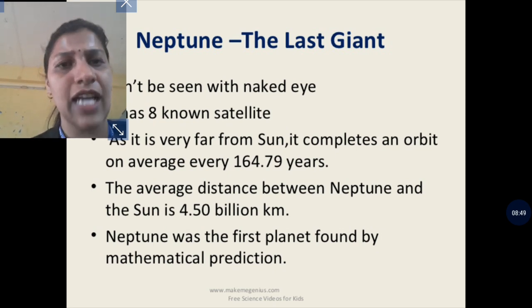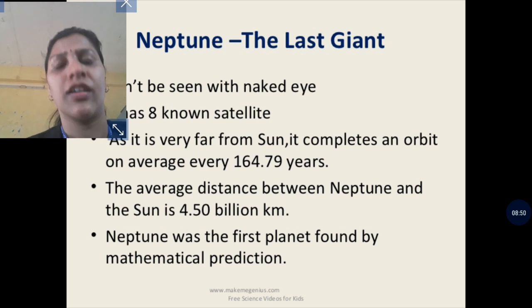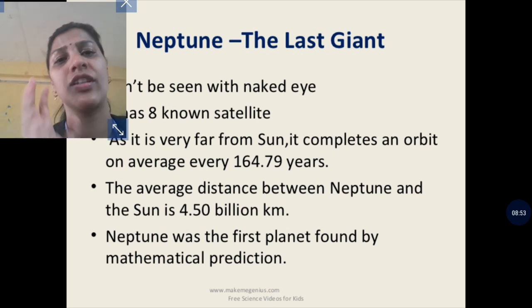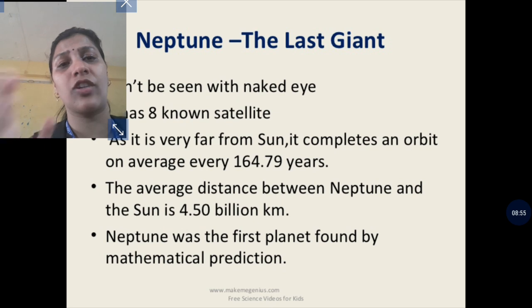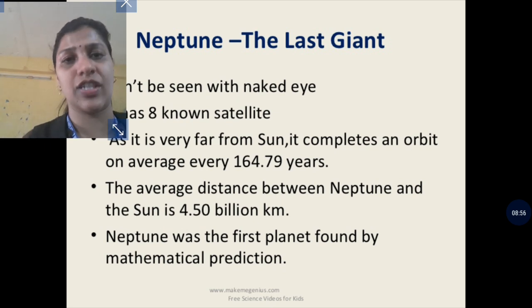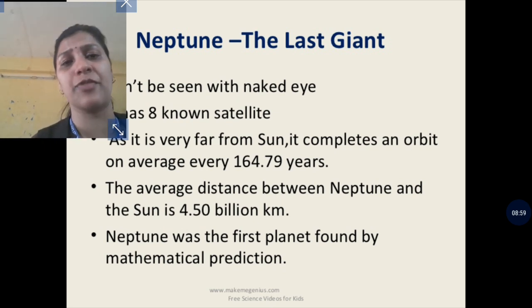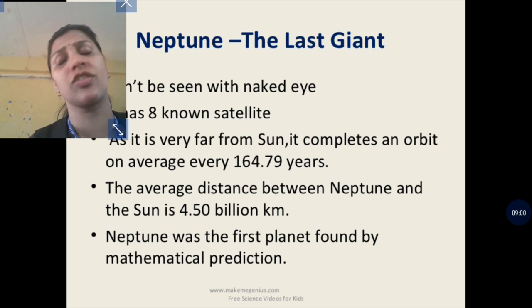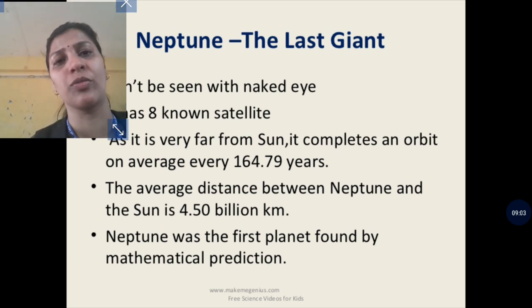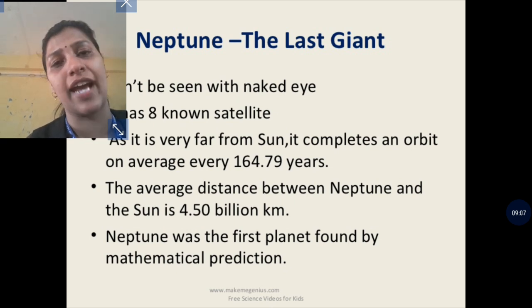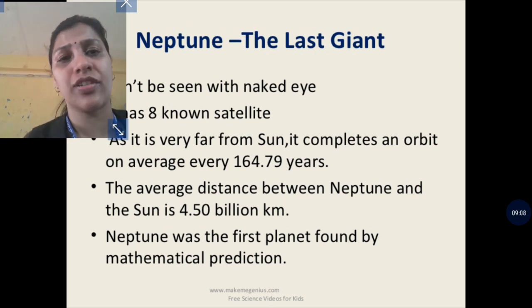We also discussed constellations. A constellation is a group of stars that forms a pattern — it can take the shape of animals or human beings. That pattern of stars is called a constellation.